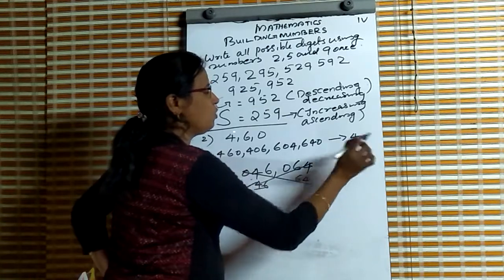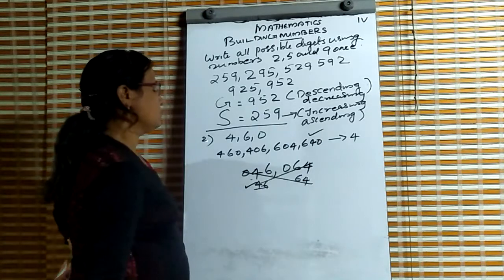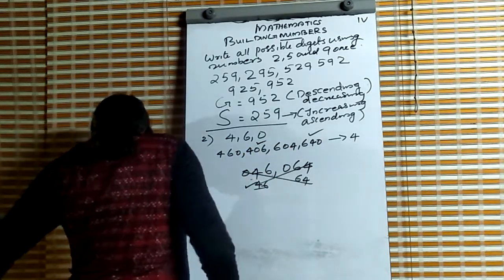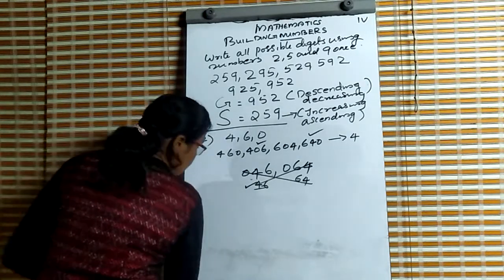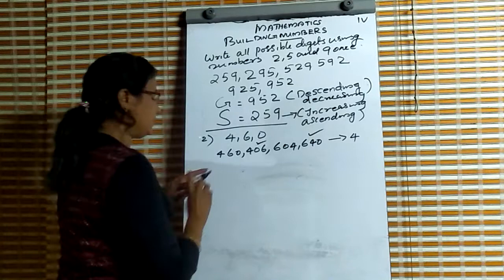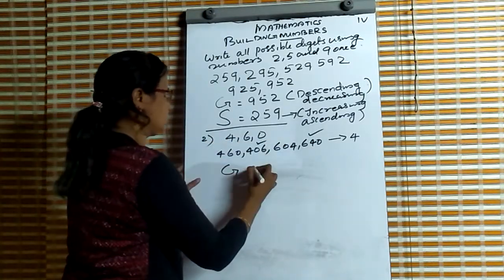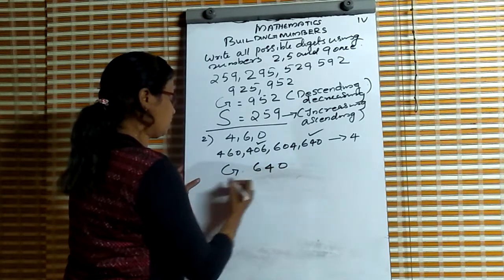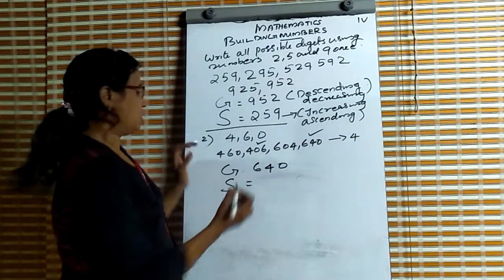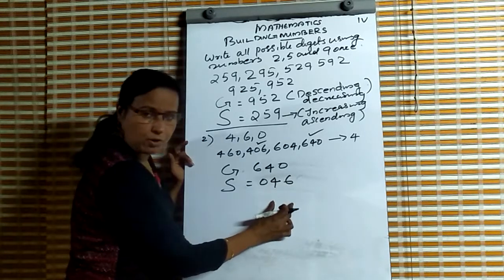So when zero comes in the digits, we get only four possible three-digit numbers. The greatest is 640 and the smallest is 406. For writing the greatest, we arrange 4, 6, 0 in decreasing order: 6, 4, 0. For the smallest, we use increasing order, but since 0 cannot start a number, the smallest is 406.